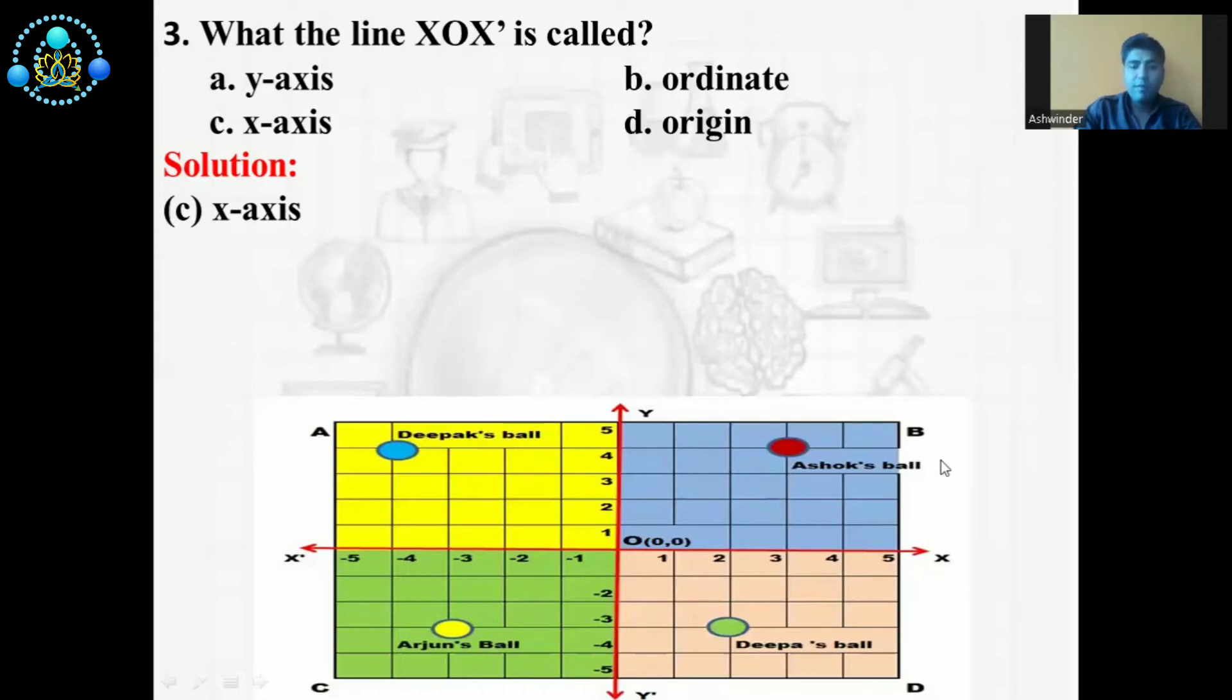With the help of the diagram, we can easily find out that XOX' is called the x-axis. So the correct answer is C. Now we will discuss the next question.